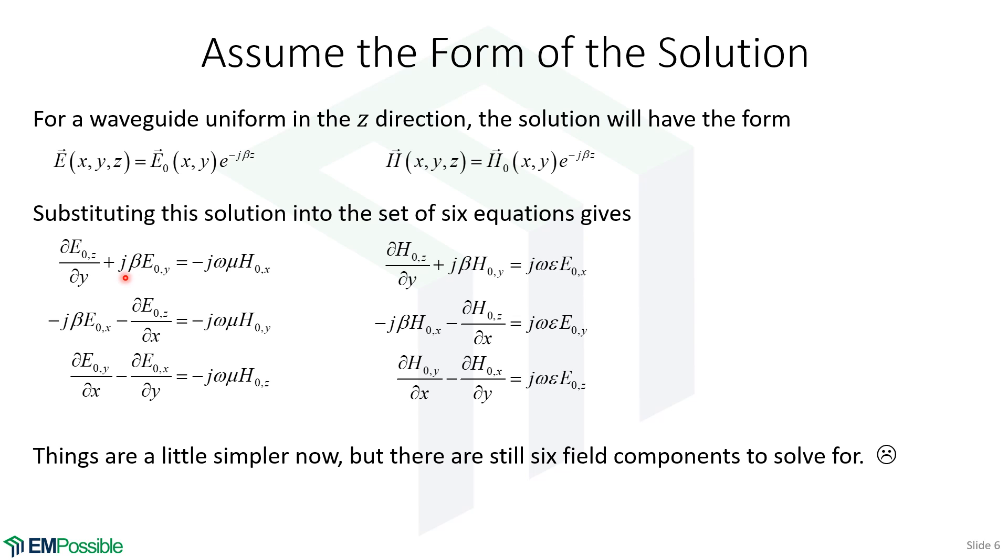Otherwise, the field component is unchanged. So the z derivatives, there's just now a j beta sitting there. And instead of having e z, h z, h x, h y, it's an e naught z, an e naught y, h naught x, because that's the vector components of these two-dimensional pictures that we talked about, the field profiles. But we still have six field components that we need to solve for.